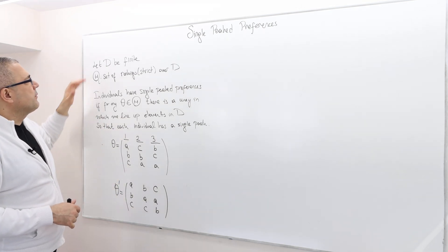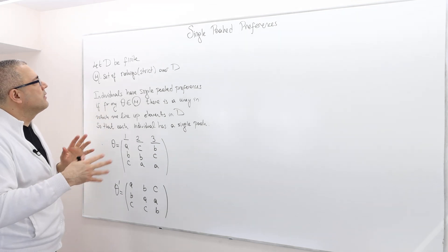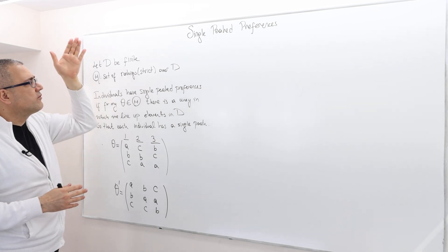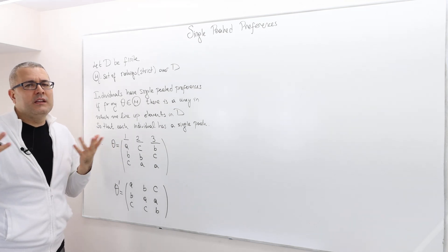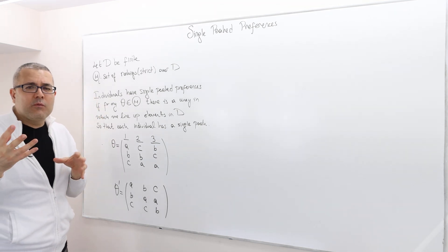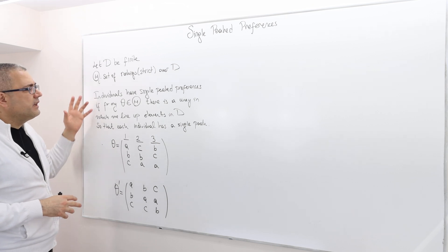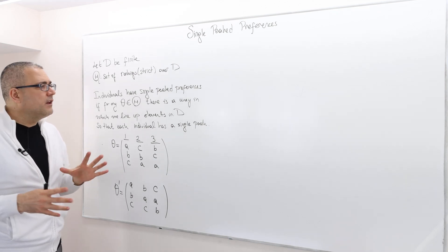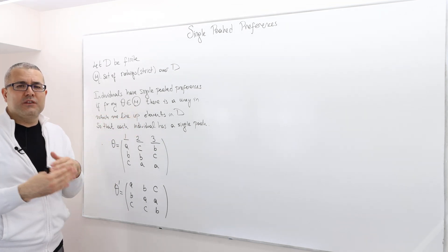In this episode, I will explain what we mean by single-peaked preferences. For simplicity, I'm going to assume that D, the set of alternatives or decisions, is finite. So a type space for each individual i is nothing but strict rankings over D — we don't allow indifferences for simplicity. However, we are going to restrict it even further, because not allowing indifferences is a kind of restriction, but it's not enough. I'm not going to give you the full formal definition because it's very notation heavy; I'll give you the idea and then a simpler environment where the formal definition is much simpler.